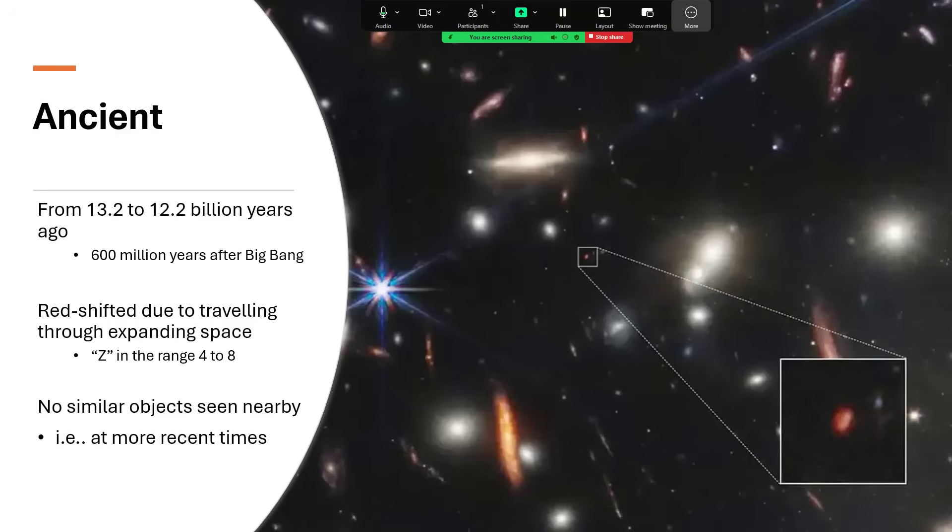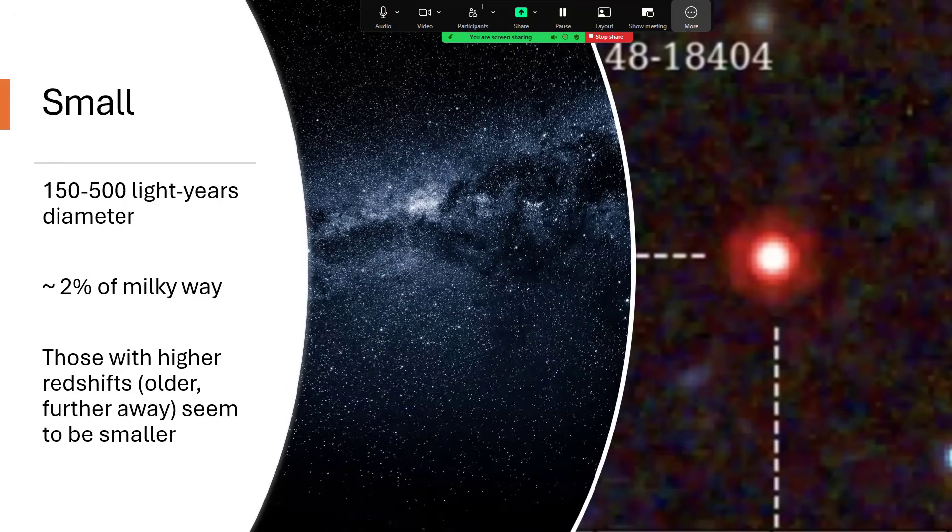Now, we just don't see any objects like this at more recent epochs, closer by at lower redshifts. These are galaxies in formation, and that process has now stopped, so we just don't see any in the modern universe at all. They are tiny, 500 light years in diameter maximum, some of them are smaller. That's around 2% the diameter of our Milky Way, so very small indeed. It looks like those with higher redshifts, around the sort of eight mark, are smaller even than the nearer ones, indicating a degree of growth, and that makes a lot of sense.